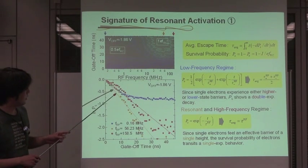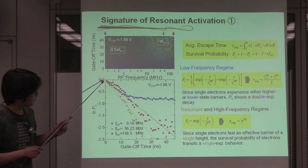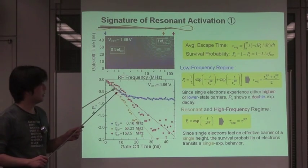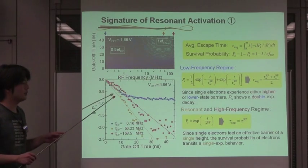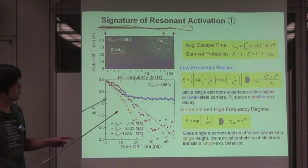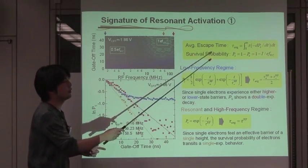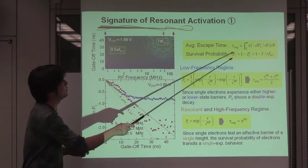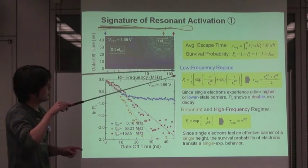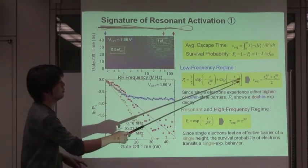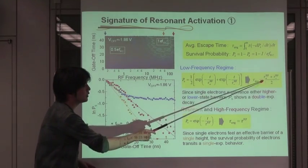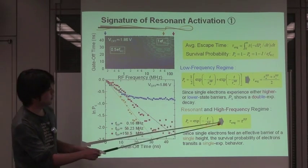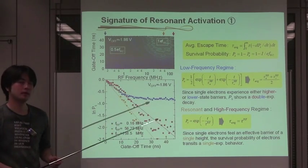On the other hand, in the higher frequency regime, the experimental data can be fitted with the single exponential curve. The average escape time can be calculated from the survival probability based on this relation. In the lower frequency regime, the average escape time is identical to the mean of the two fitting parameters. On the other hand, in the resonant and high frequency regime, the average escape time is given by the fitting parameter itself.